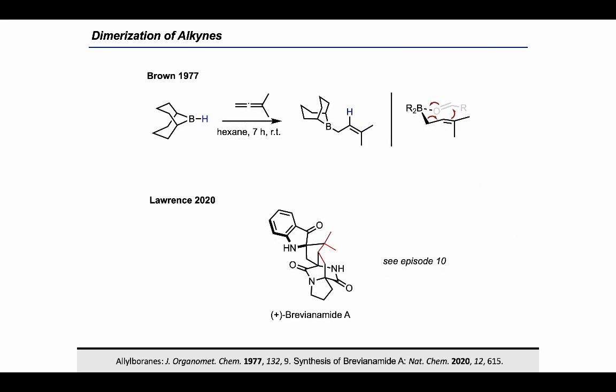We then turned our attention to allylboranes. Allylboranes are a prevalent class of nucleophiles in organic chemistry and are frequently used for the formation of homoallylic alcohols by allylation of aldehydes and ketones. As demonstrated already in the 1970s by H.C. Brown, allylboranes can be prepared by hydroboration of allenes.